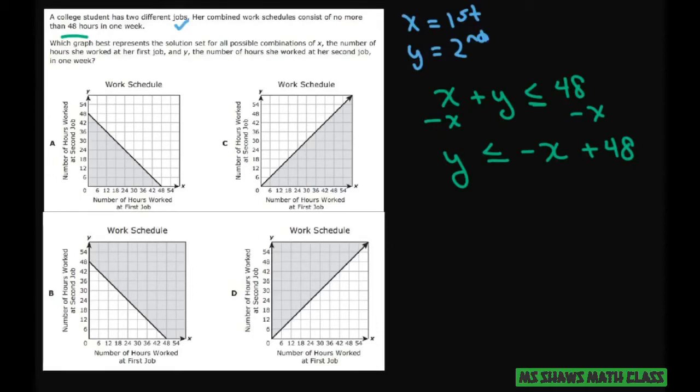Looking at this, that means my slope is negative 1. My Y intercept or B equals 48. So the Y intercept is 48, which is here. This is your Y.